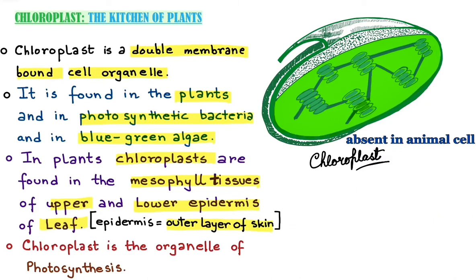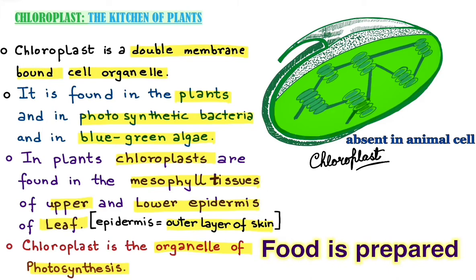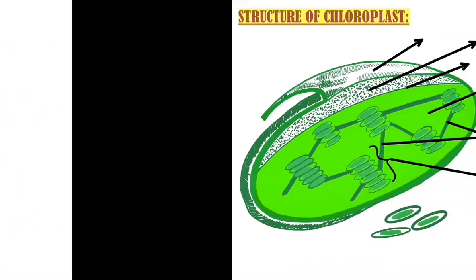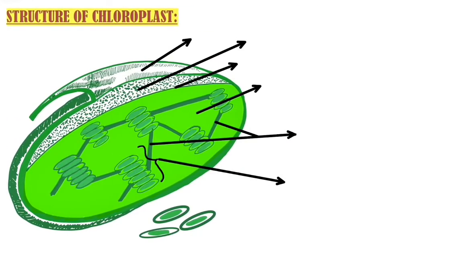Chloroplast is called the organelle of photosynthesis because it is the organelle where food is prepared by the process of photosynthesis in plants.